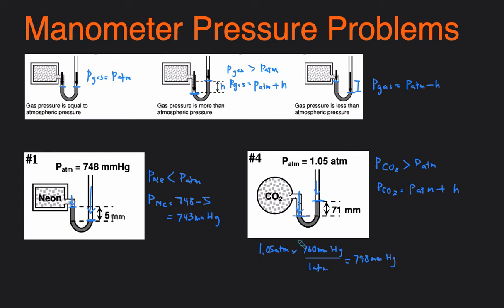If you're having trouble with pressure conversions, take a look at my pressure conversion video on how to convert between all different types of gas pressure units. Substituting in: 798 mmHg plus the height difference of 71 mmHg gives us a final pressure of 869 mmHg for CO2.